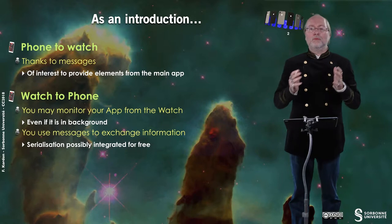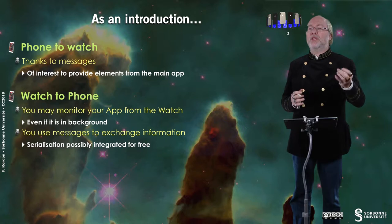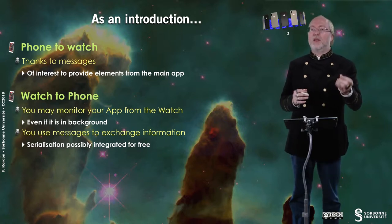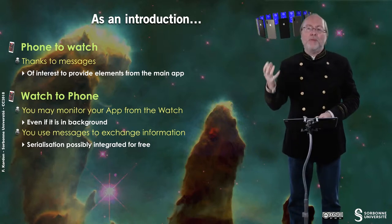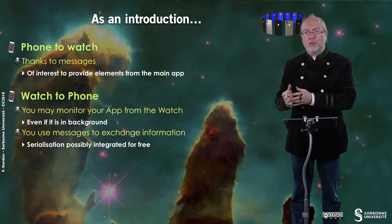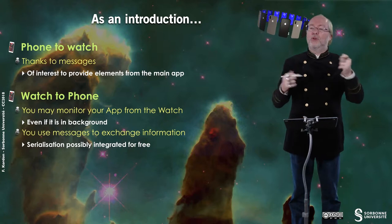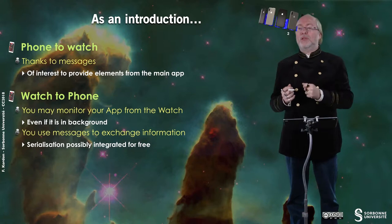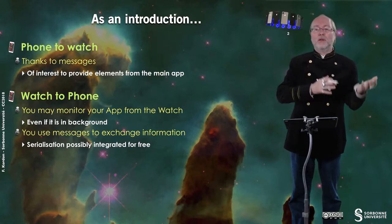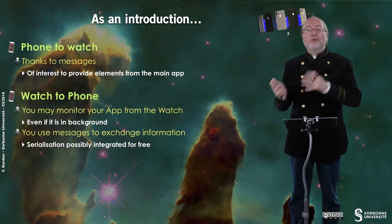From the phone to the watch you send messages. On one hand you have the main application executed on the iPhone device, and on the other hand you have the watch app extension executed on the Apple Watch. Typically you can have exchanges so that the main application can drive the watch application, and the watch application can also drive the main application. From watch to phone is absolutely the same thing — you also send messages.